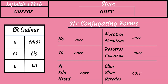For YO, you would use O. For TÚ, you would use ES. For ÉL, ELLA, and USTED, you would use E. For NOSOTROS, NOSOTRAS, you would use EMOS. For VOSOTROS, VOSOTRAS, you would use EIS. And for ELLOS, ELLAS, and USTEDES, you would use EN.